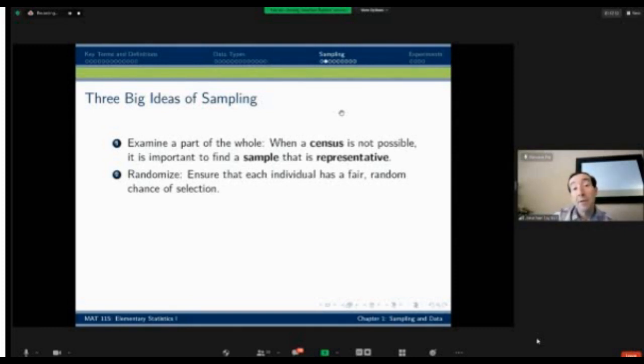Randomize. That's a key thing to do in sample. We want to ensure that each individual in the population has a fair random chance of selection. It doesn't necessarily mean equal chance, but a fair chance, and that equality might be determined by how much of the population they represent.